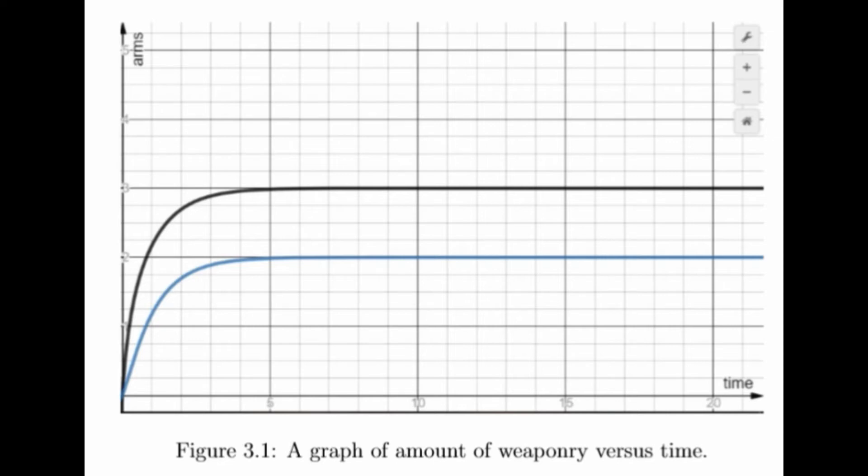In the problem, the result: the black curve represents the graph X of T, while the blue curve represents the graph Y of T. It can be seen that the graph X of T is higher in the amount of weaponry versus time compared to graph Y of T.